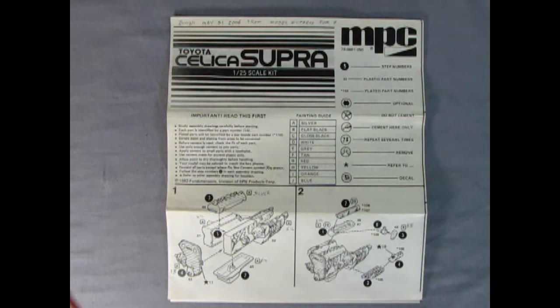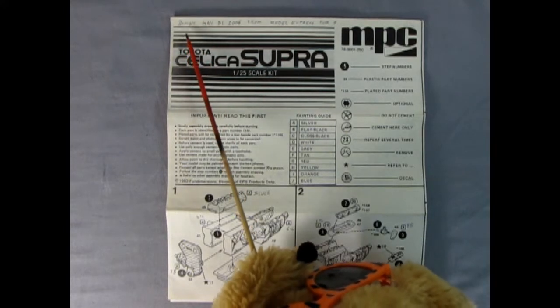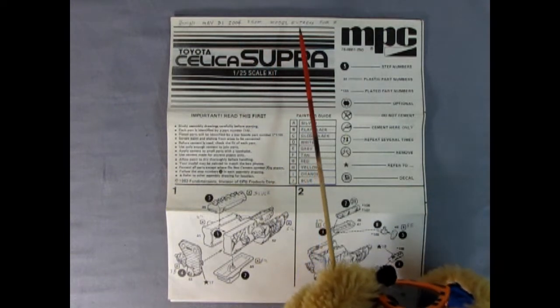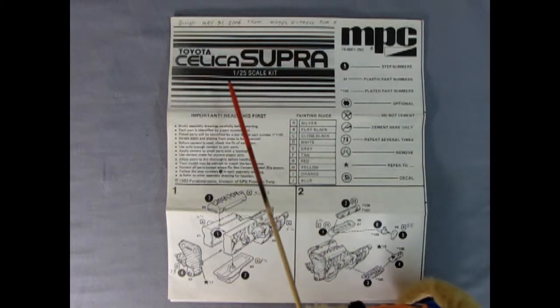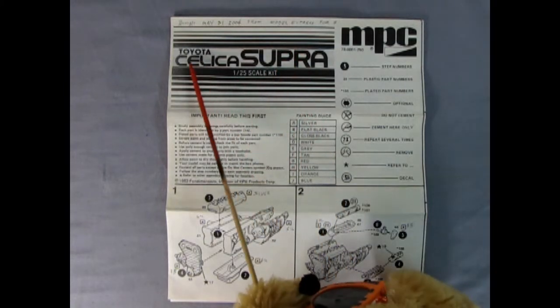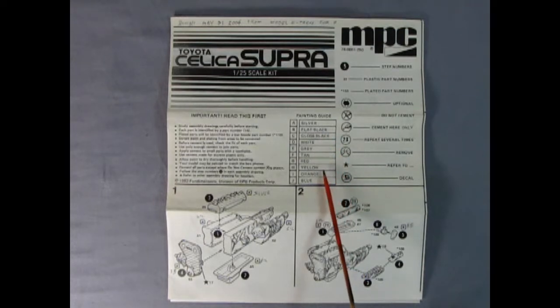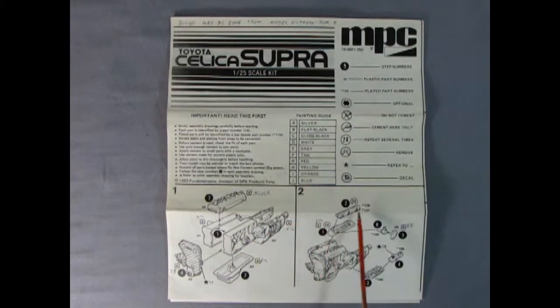Hello everybody, this is Danny the Dog again, and I get to show you the instruction sheet, which is really cool. Up here we've got a note that says this was bought May 31st, 2004 from Model Express. Do you guys remember that website? That was a great website. Hopefully Monster Hobbies can be like that one one day. Here we have the nice Toyota Celica Supra in the original font. We've got the nice paint guide here - you'd need silver, flat black, gloss black, white, gray, tan, red, yellow, orange, and blue in order to complete this model.